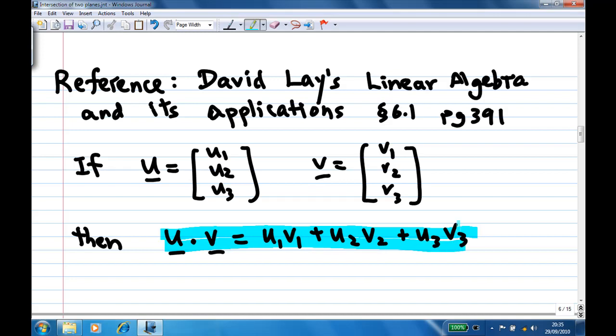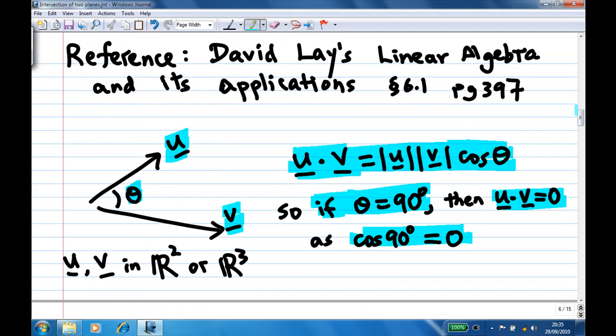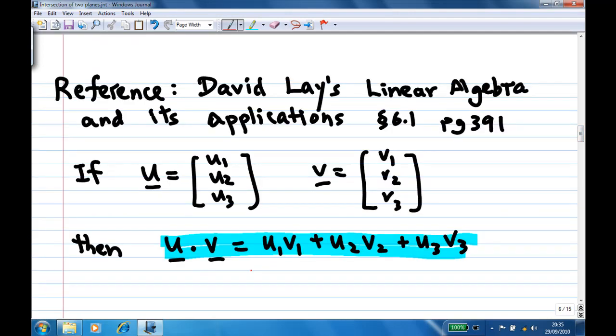So let's go back and write out something so that you can remember. This is a geometry approach of the dot product, geometrical interpretation for a dot product. Whereas on the next page, u dot v, this will give you the algebraic interpretation of the dot product.